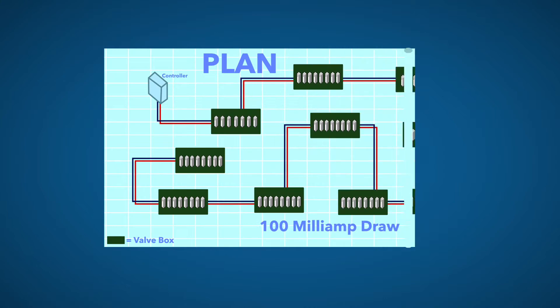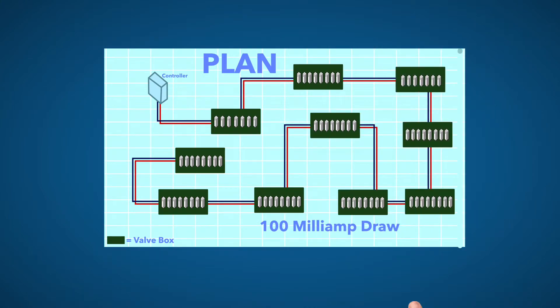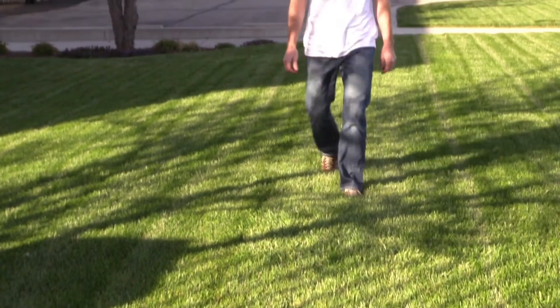If we know the total system normal mA draw, we can perform some simple checks before we go out into the field to help us determine what we're going to be looking for.